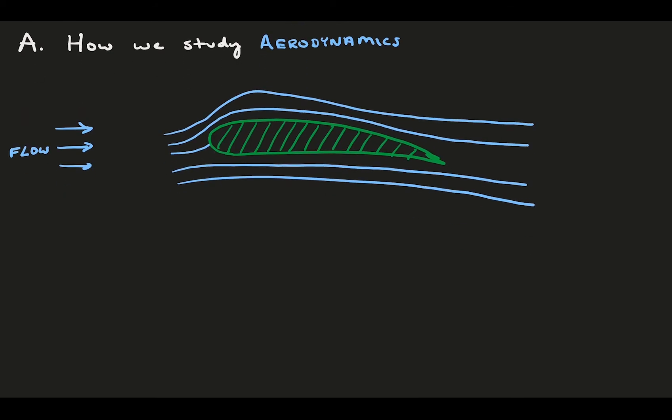First, aerodynamicists are generally concerned with the global body forces that the flow causes. Consider the way a fluid mechanician would study this type of flow. They would be very concerned with defining the exact flow field as it develops over the object. In general, they would seek a mathematical definition of the entire flow.